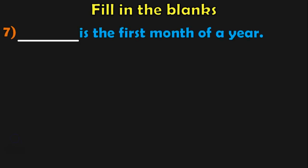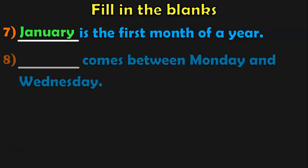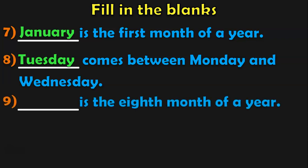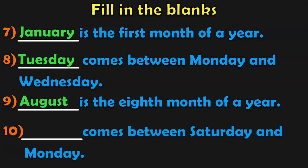Fill in the blanks. Blank is the first month of a year — it is January. Blank comes between Monday and Wednesday — the answer is Tuesday. These are different ways in which you can test your children. Blank is the eighth month of a year — the answer is August. Blank comes between Saturday and Monday — it is Sunday.